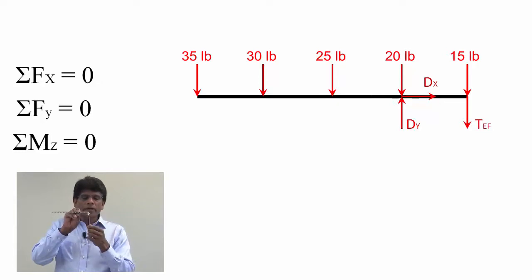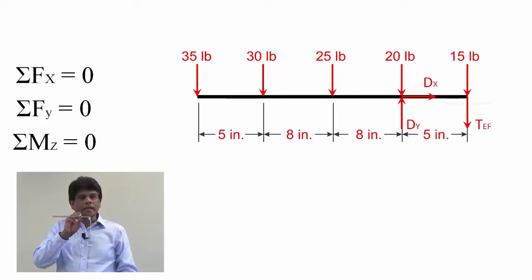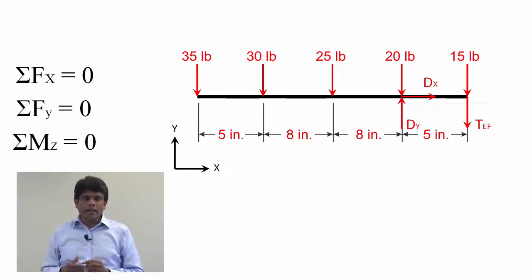Notice how I showed the direction of the forces pointing down. Now to complete the free body diagram, I will have to show all the critical dimensions as shown in the diagram, and finally I have to attach a coordinate system showing the positive X direction and the positive Y direction. This completes our free body diagram, and we are now ready to solve this problem.